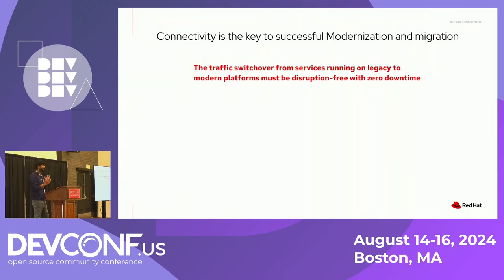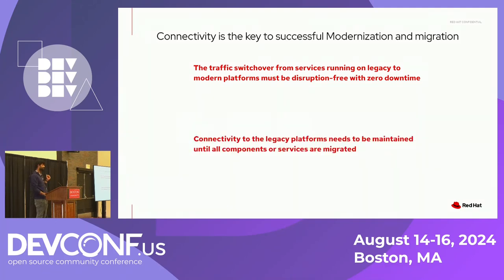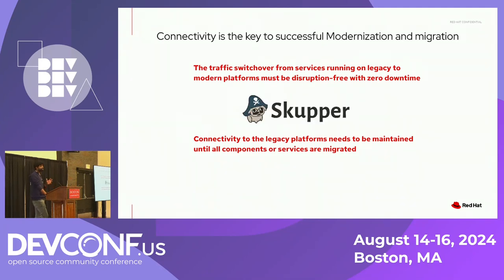When you are thinking about connectivity, you need to think about a couple of things. When moving from environment A to environment B, traffic switchover for services running on legacy to modern platforms must be disruption-free with almost zero downtime. Connectivity to legacy platforms needs to be maintained until all components or services are migrated. That is where Skupper really helps. Skupper is a layer 7 connectivity product which is open source. You can check it out at skupper.io. It helps you connect services distributed across multiple environments.